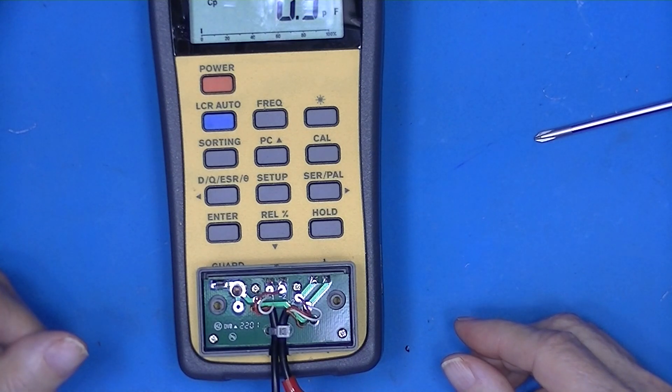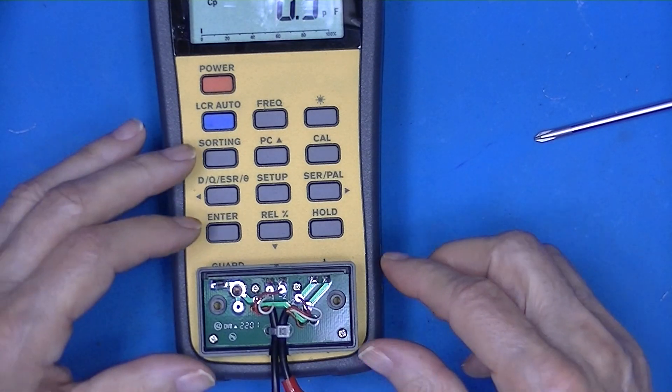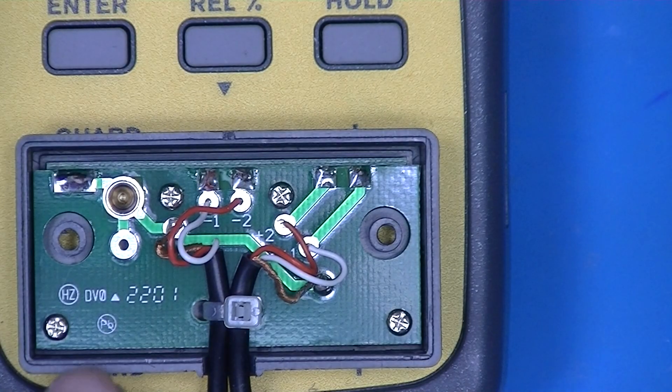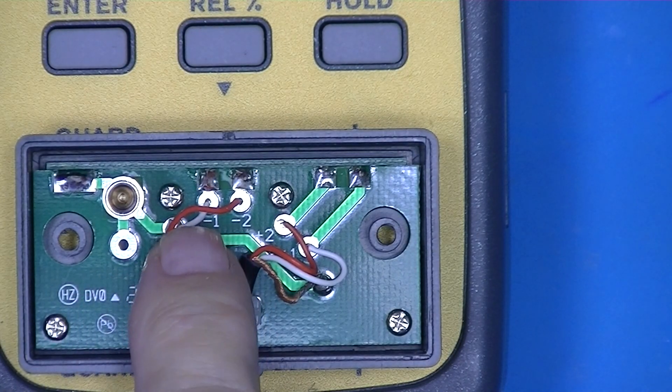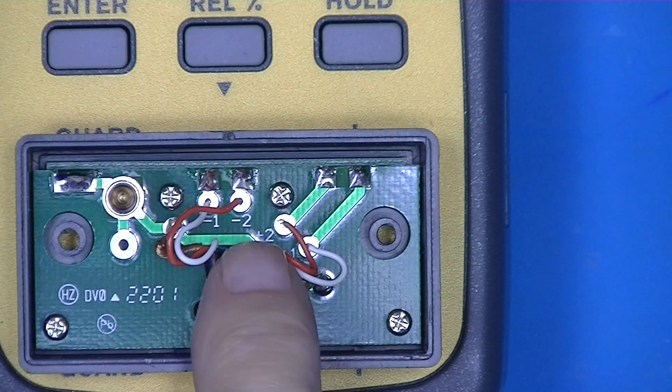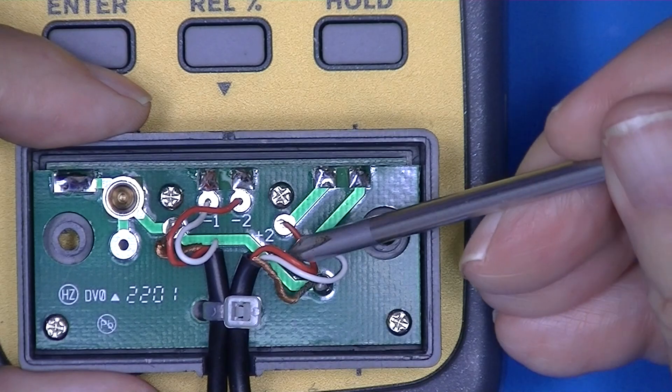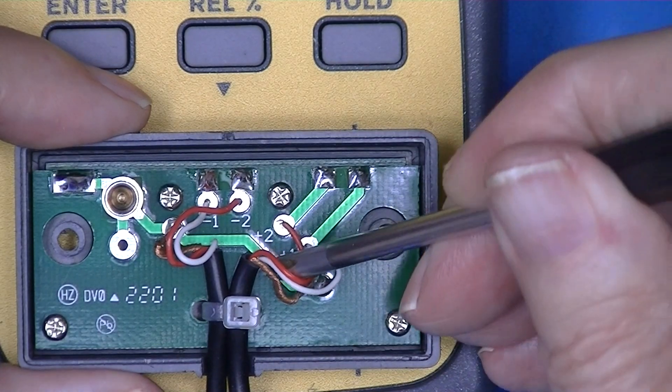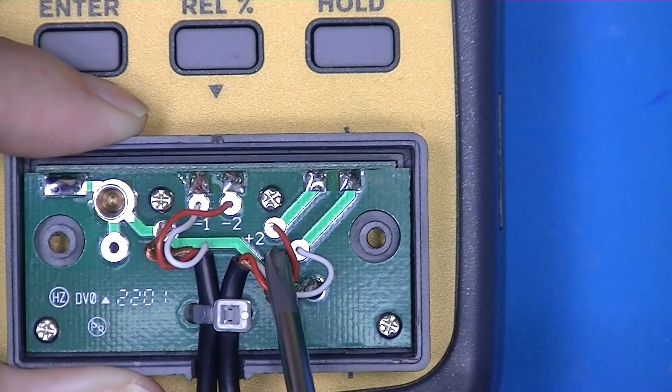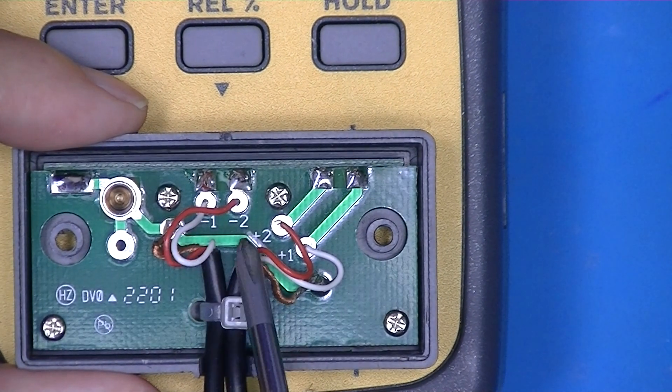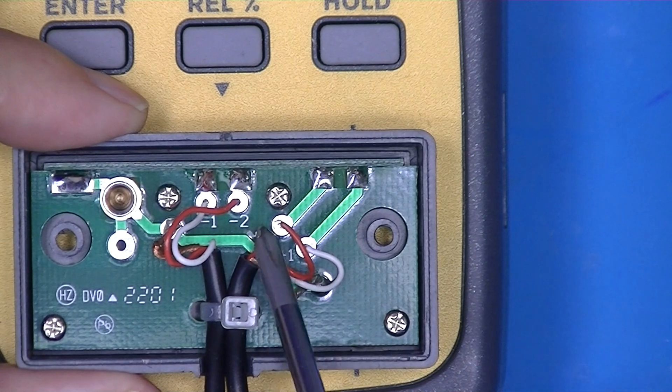We now have turned it into a four wire measuring system. If you take a look at it, the four wires are minus one, two, and plus two, and plus one and two. So we have minus one and two, plus one and two.